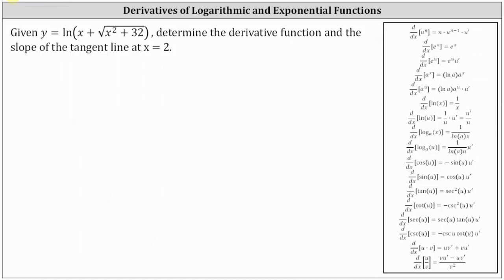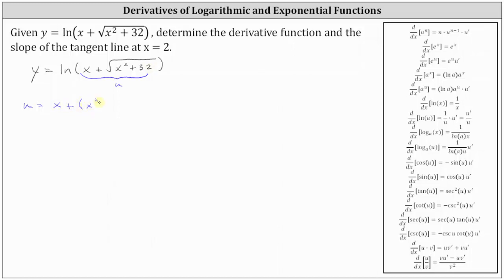We are given the function y equals natural log of the quantity x plus the square root of the quantity x squared plus 32. Notice we do have a composite function where the inner function, often referred to as u, is x plus the square root of the quantity x squared plus 32. So if we have u equals x plus, let's write the square root using a rational exponent, which gives us the quantity x squared plus 32 raised to the power of positive 1/2.